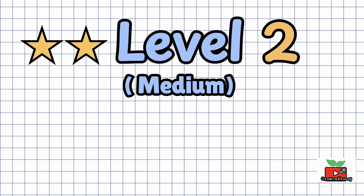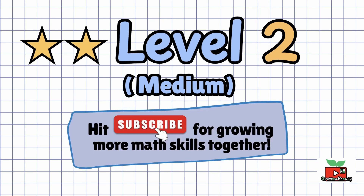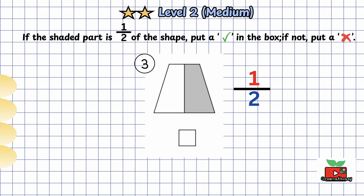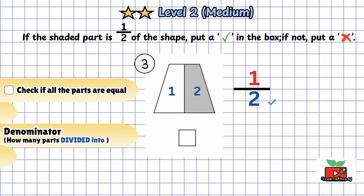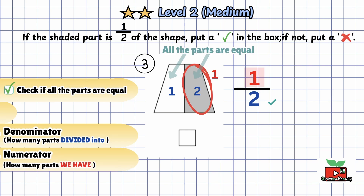Level 2 — medium questions. If this video is helping you, please hit subscribe. Your support means a lot and helps me make more fun math videos for you. Question 3: look at the shape. If the shaded area is 1 half, put a tick in the box. If it is not 1 half, put a cross. Let's look at the denominator, which is 2. The shape is divided into two parts. Are all the parts equal? Yes. The numerator is 1, and 1 part is shaded. So the shaded part is 1 half of the shape.